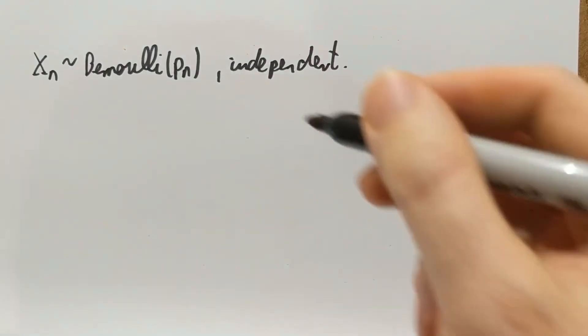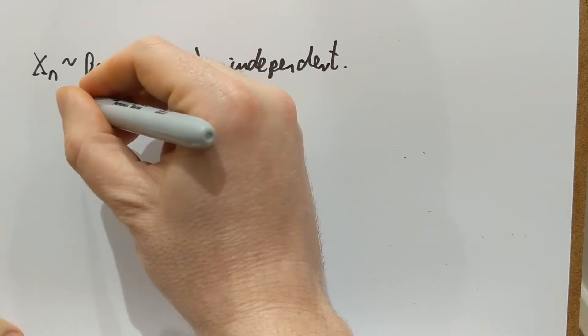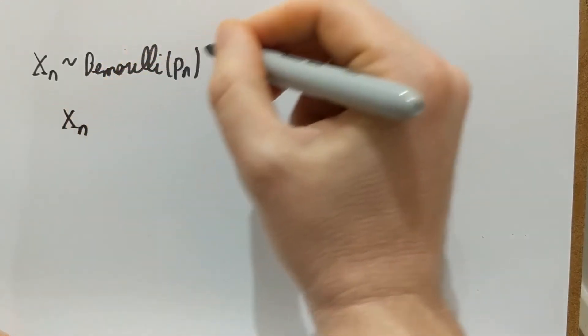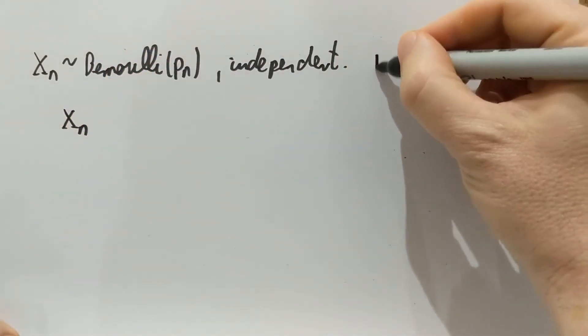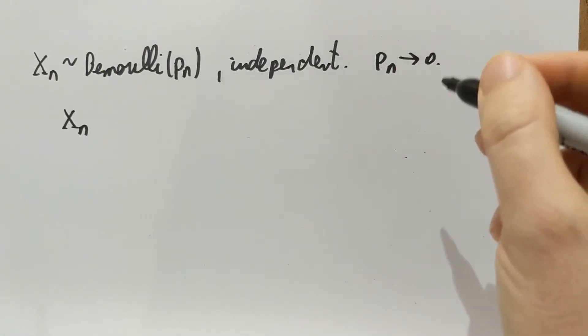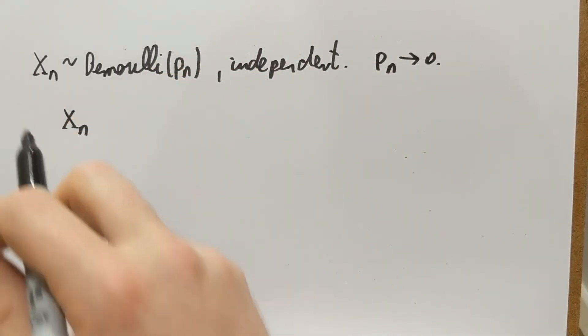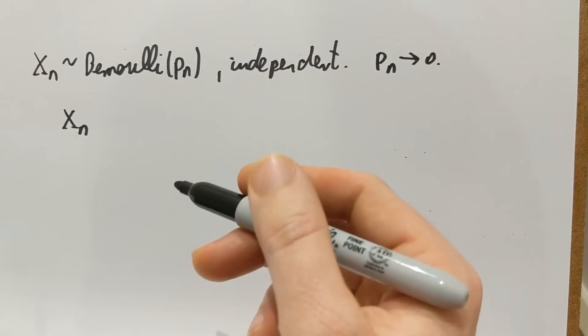Let's see when we have LP convergence. Xn converges, so I'm going to assume that Pn goes to zero as n goes to infinity. So this is the parameter of the Bernoulli, the probability that Xn is one, and the probability one minus Pn that Xn is zero.